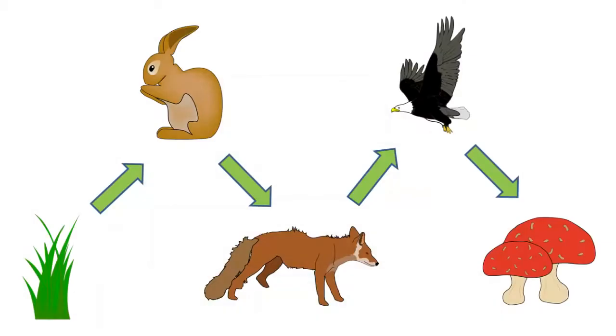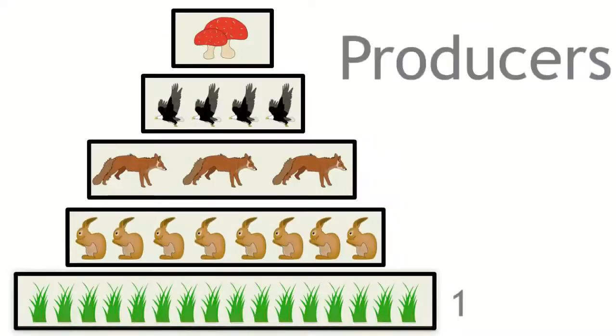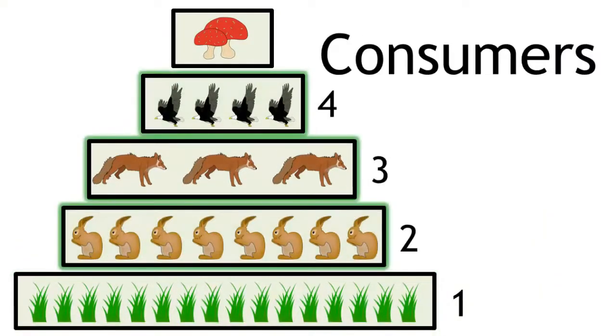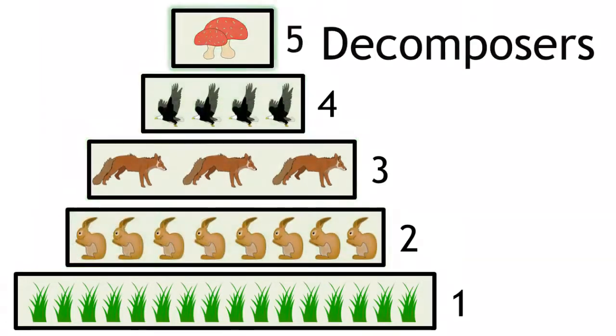So to summarize, trophic levels are the number of steps an organism is within a food chain. The first trophic level is usually the green plants, the producers. And as you go up a trophic level and along a food chain of an ecosystem, you move on to the consumers and finally the decomposers.